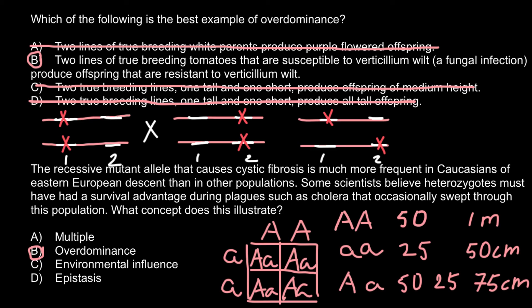You would be able to choose the correct answer: this is another example of overdominance, where heterozygotes have better fitness than homozygotes. Looking at the other answers — answer A suggests multiple alleles, which is not the correct answer here. Answer C is environmental influence, which is also not correct because the scientists believe this is caused by genetic reasons and heterozygotes have better fitness.